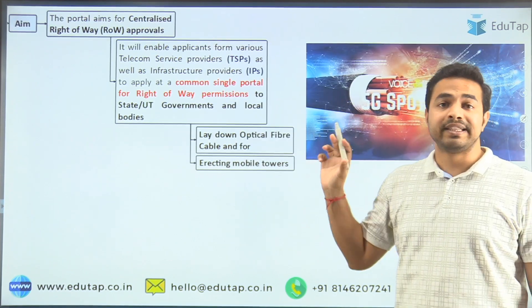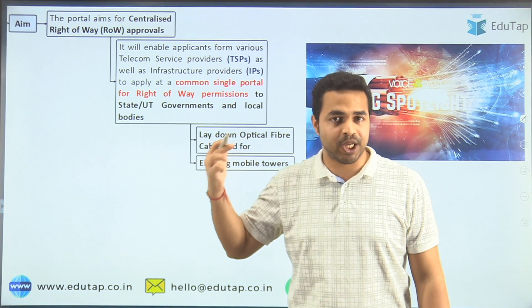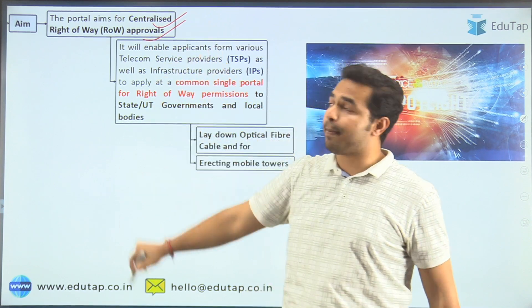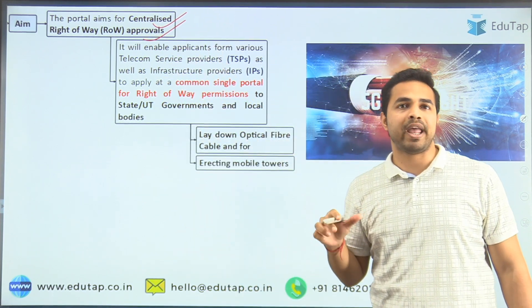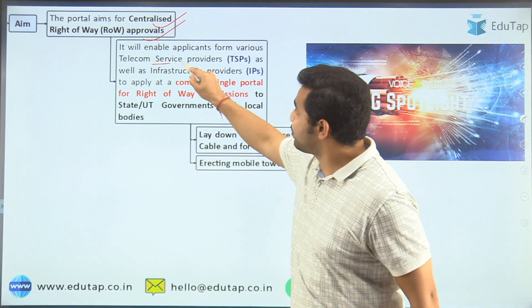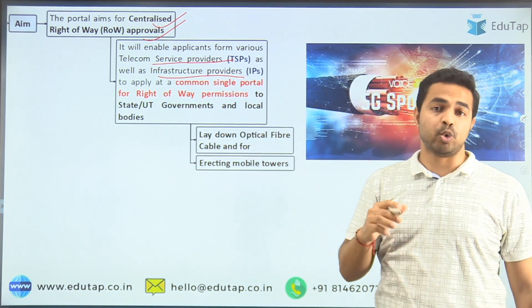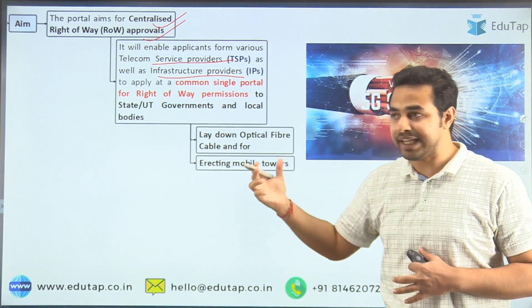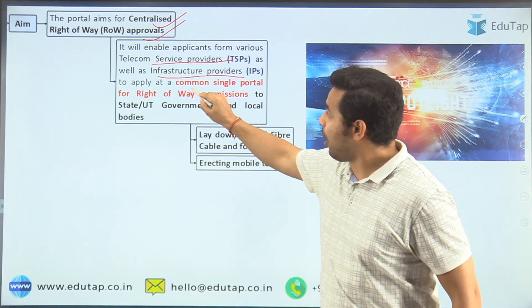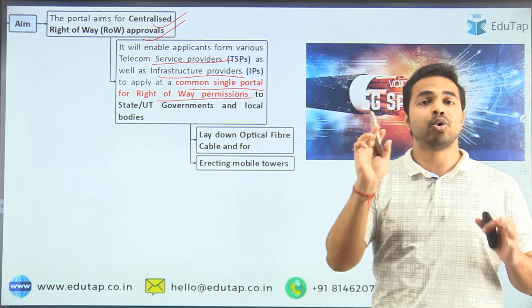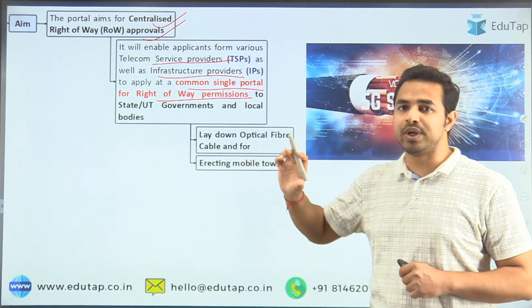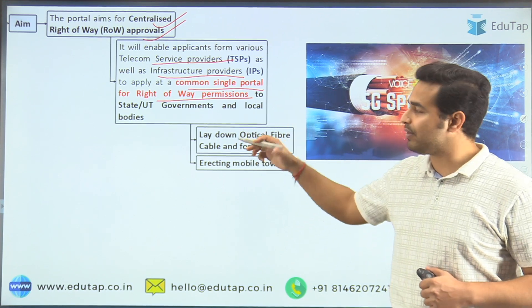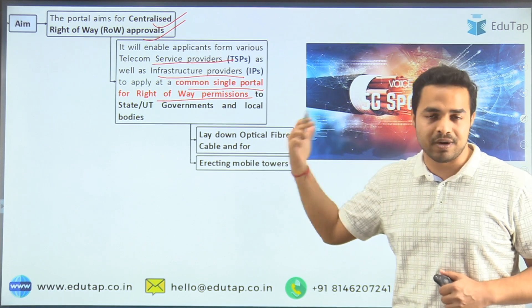When we talk about the aim — why exactly this portal was launched — the aim is to centralize the right of way approvals. These are the applications filed by telecom service providers and infrastructure providers in order to lay down different telecommunication infrastructure across the country. This portal is a common single portal for right of way permissions to all state and UT governments and local bodies.